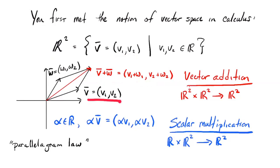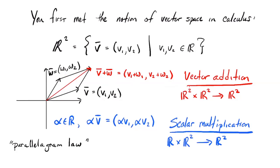If I take some vector V with coordinates V1 and V2, and some other vector W with coordinates W1 and W2, then their sum V plus W is the vector whose coordinates are V1 plus W1 for the x-coordinate and V2 plus W2 for the y-coordinate. That operation is called vector addition. In function notation, I'm writing that if I take an element of R², say V, and combine it with another element of R², say W, I produce an element of R² called V plus W.